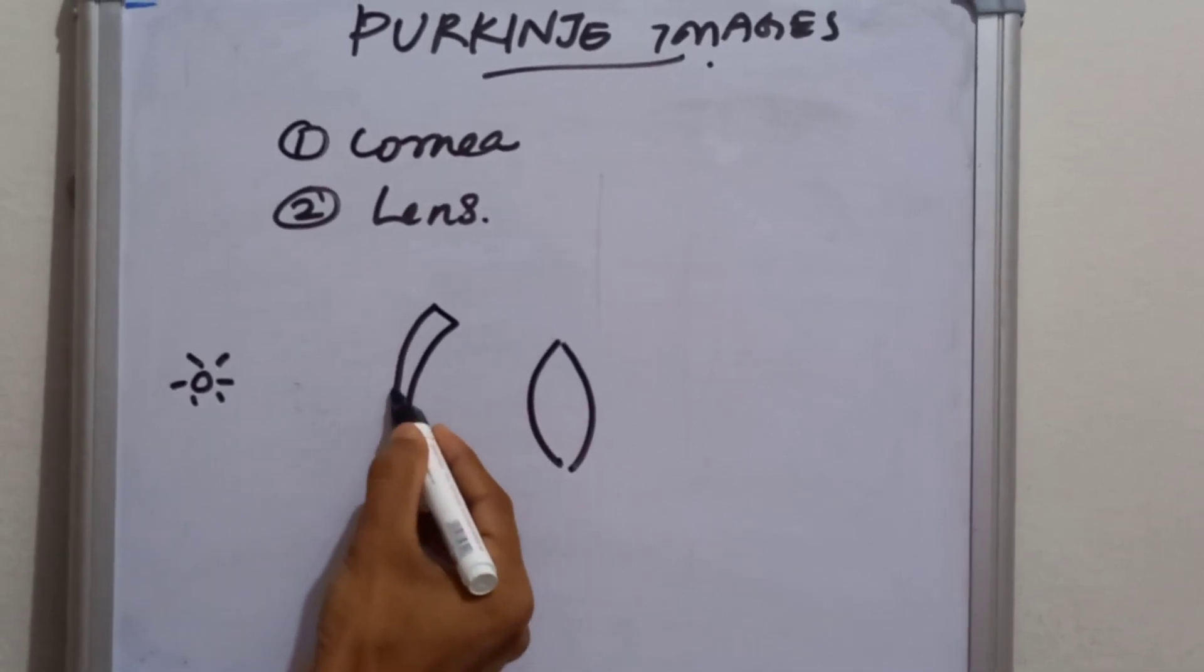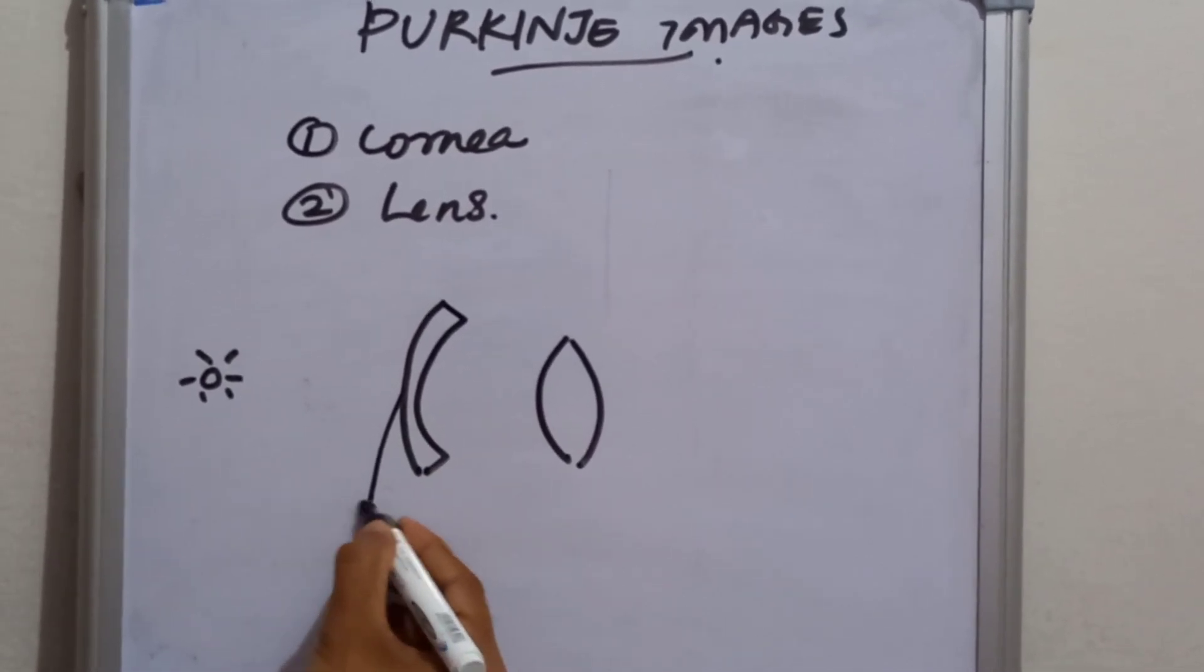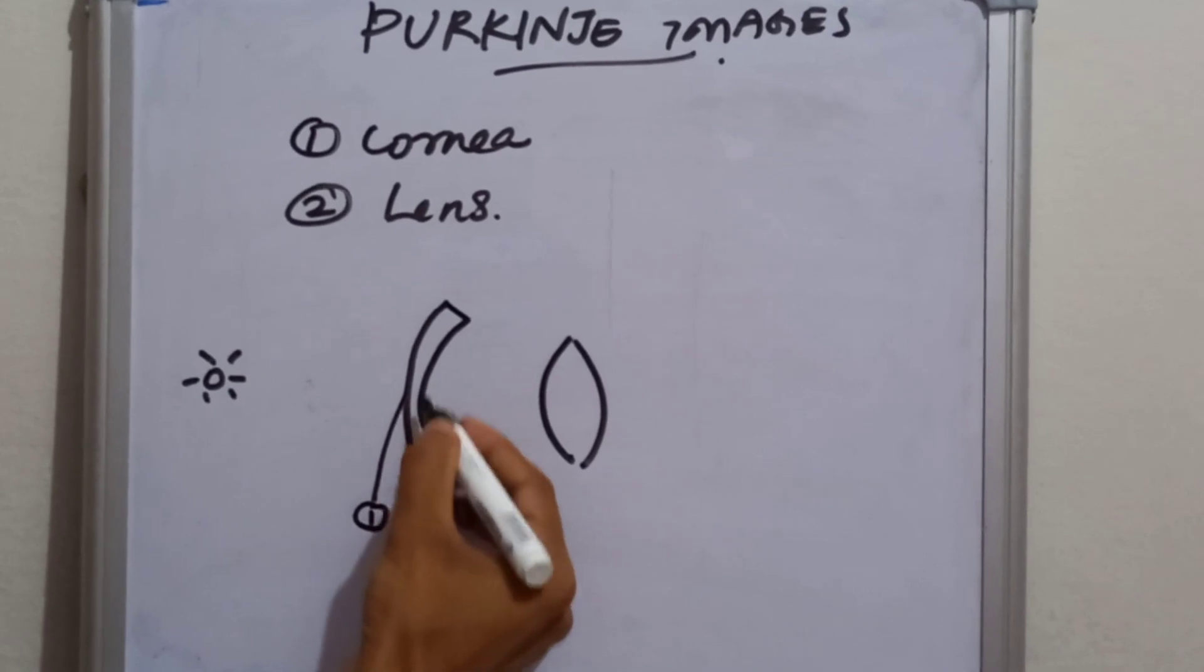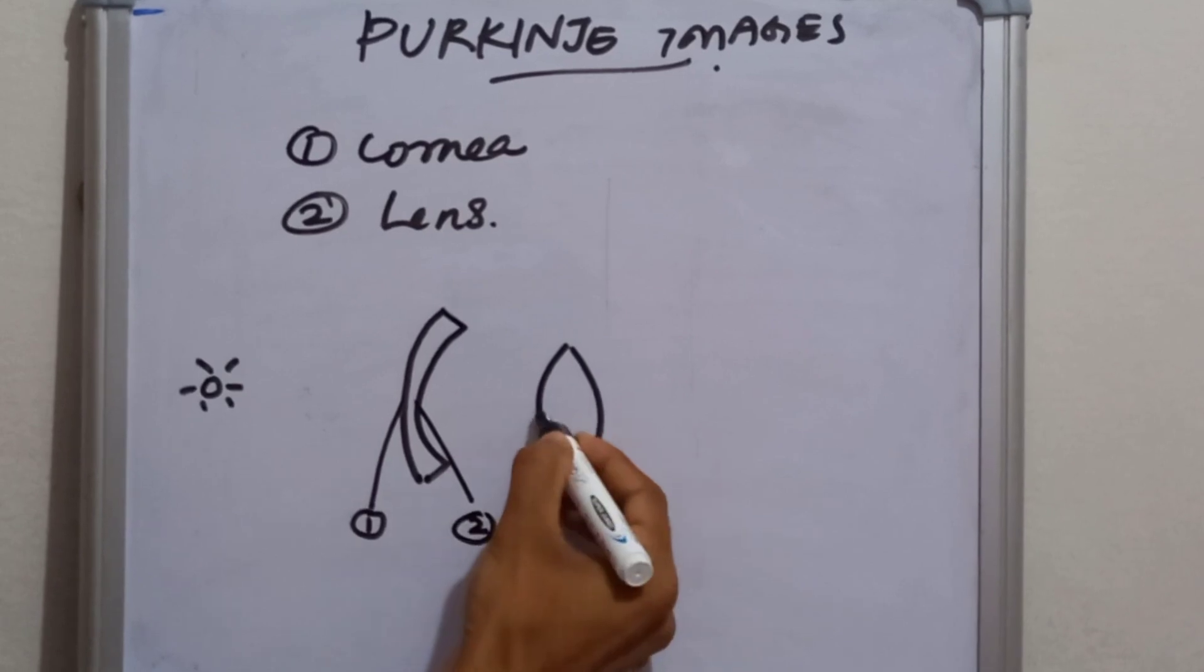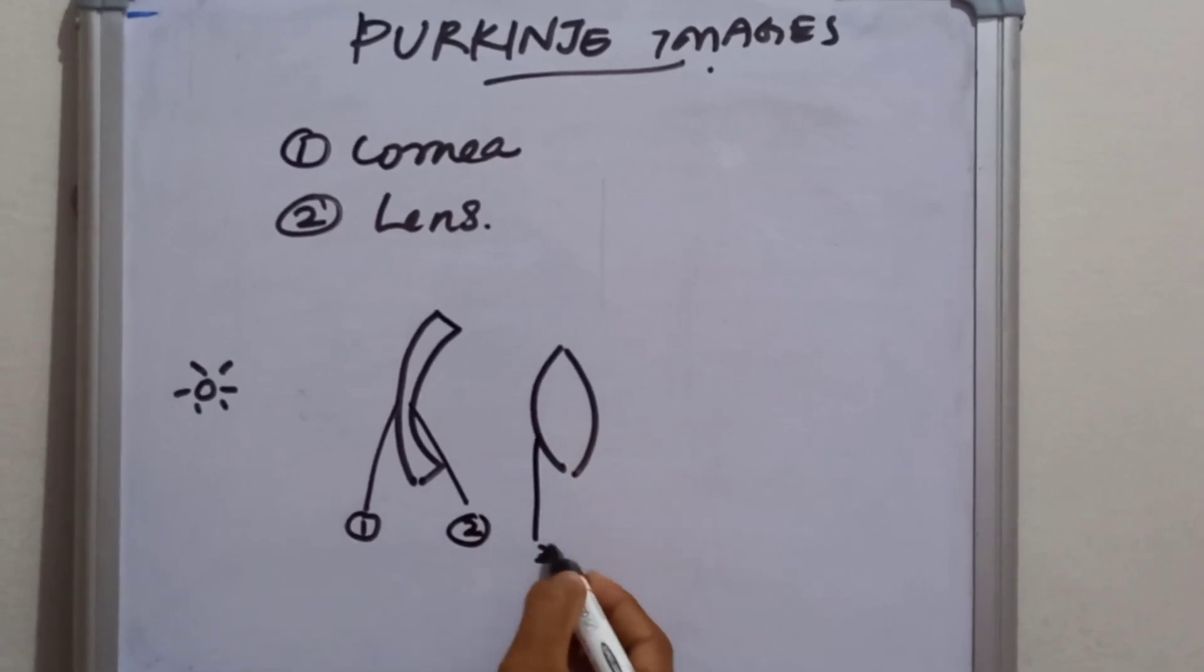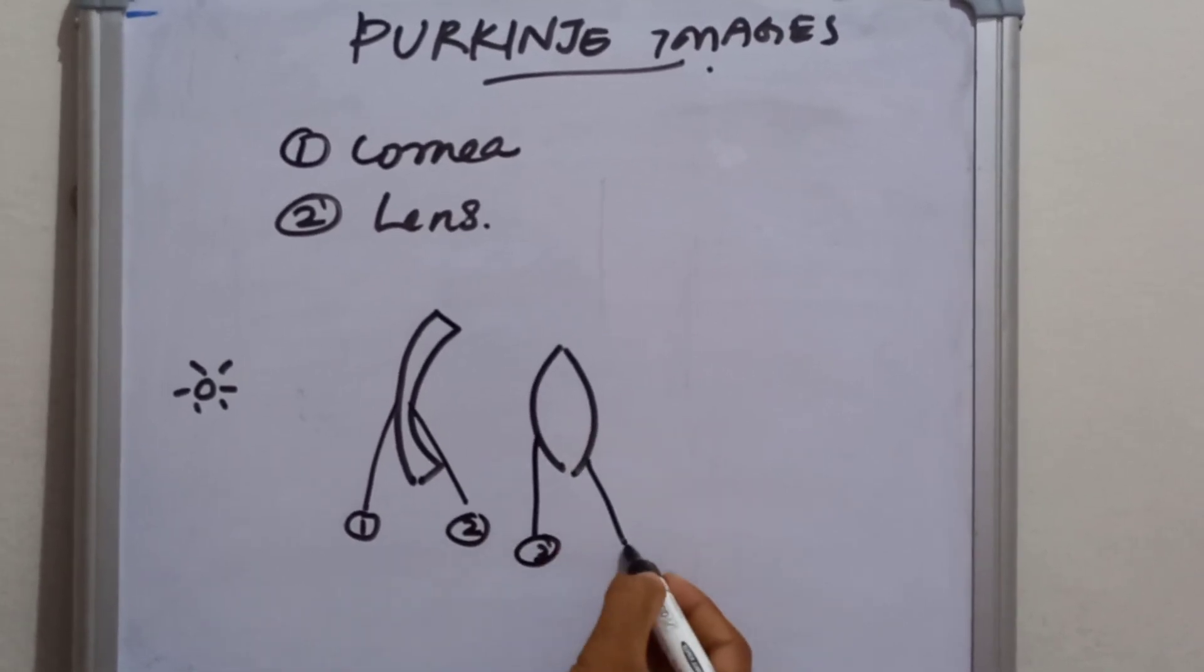The image is formed from the anterior surface of the cornea and the posterior surface of the cornea, and the anterior surface of the lens and posterior surface of the lens.